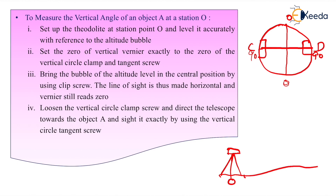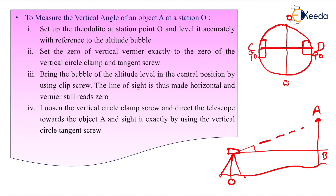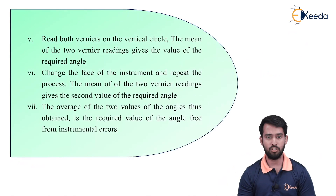Loosen the vertical circle clamp screw and direct the telescope towards point A. By loosening the vertical clamp screw, bisect the ranging rod or object at A. After exactly bisecting it, tighten the vertical circle tangent screw. Calculate the angle using vernier C as well as vernier D and take the mean of vernier C and vernier D as angle AOB. This is done in face left.